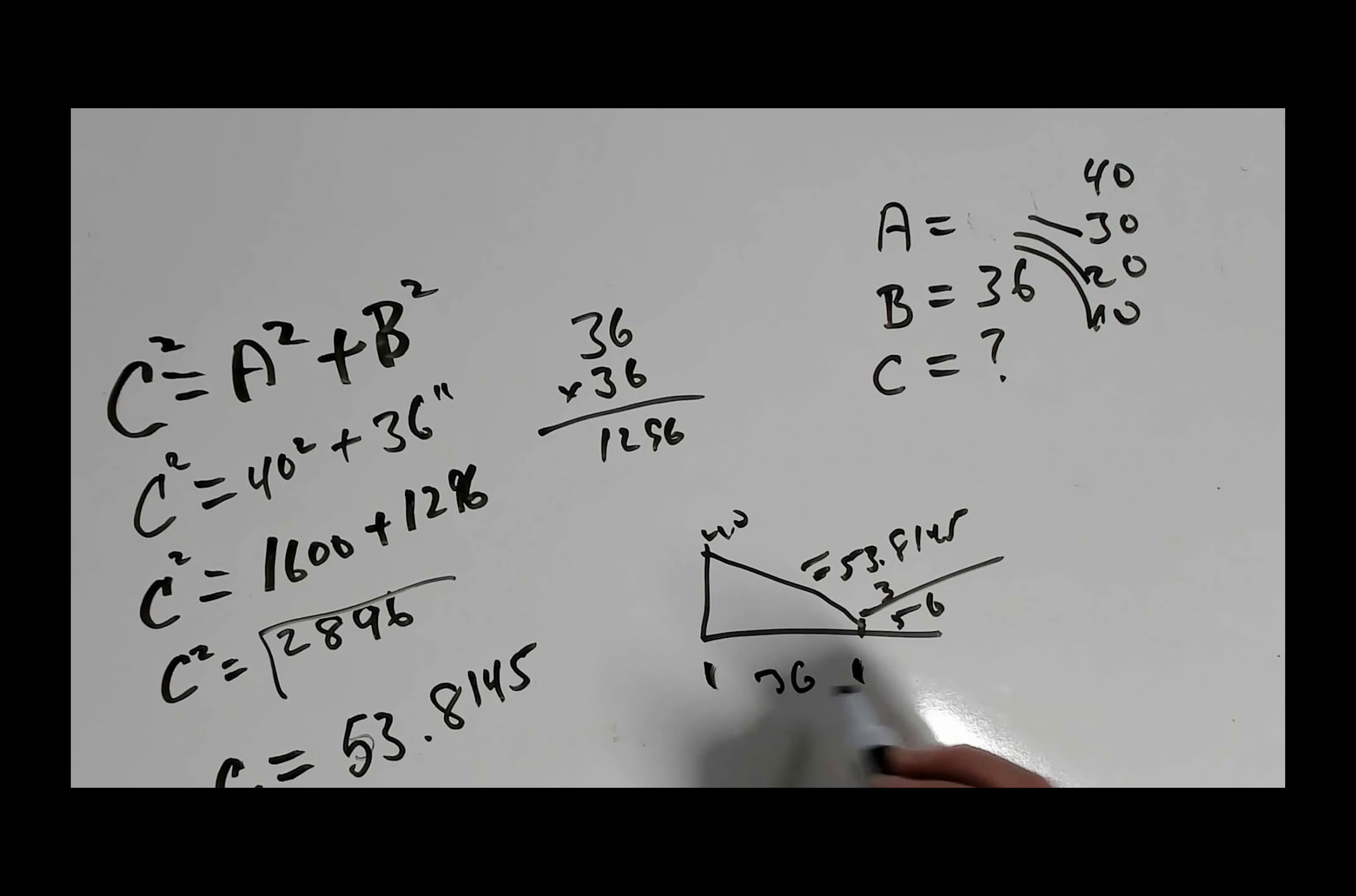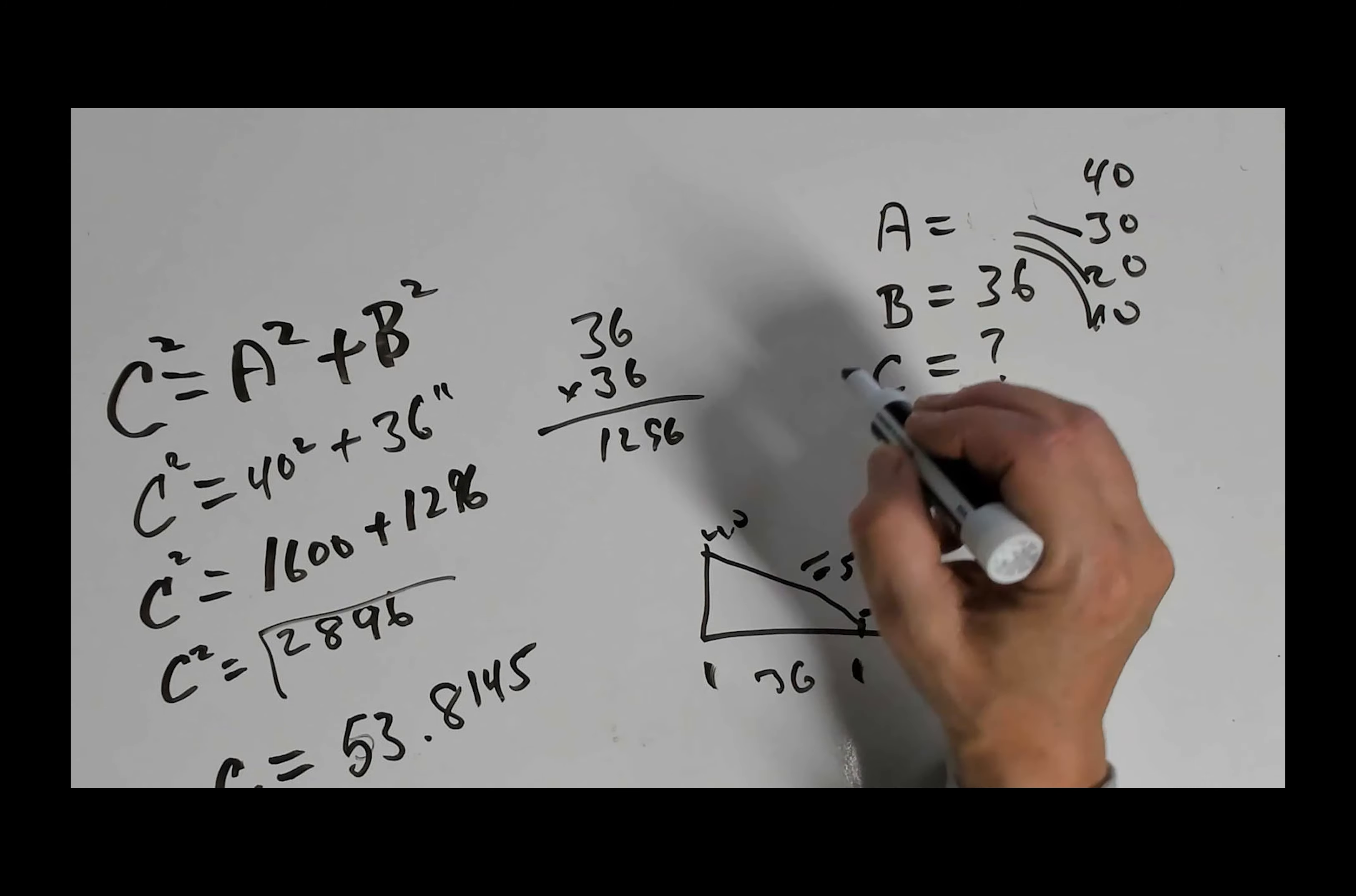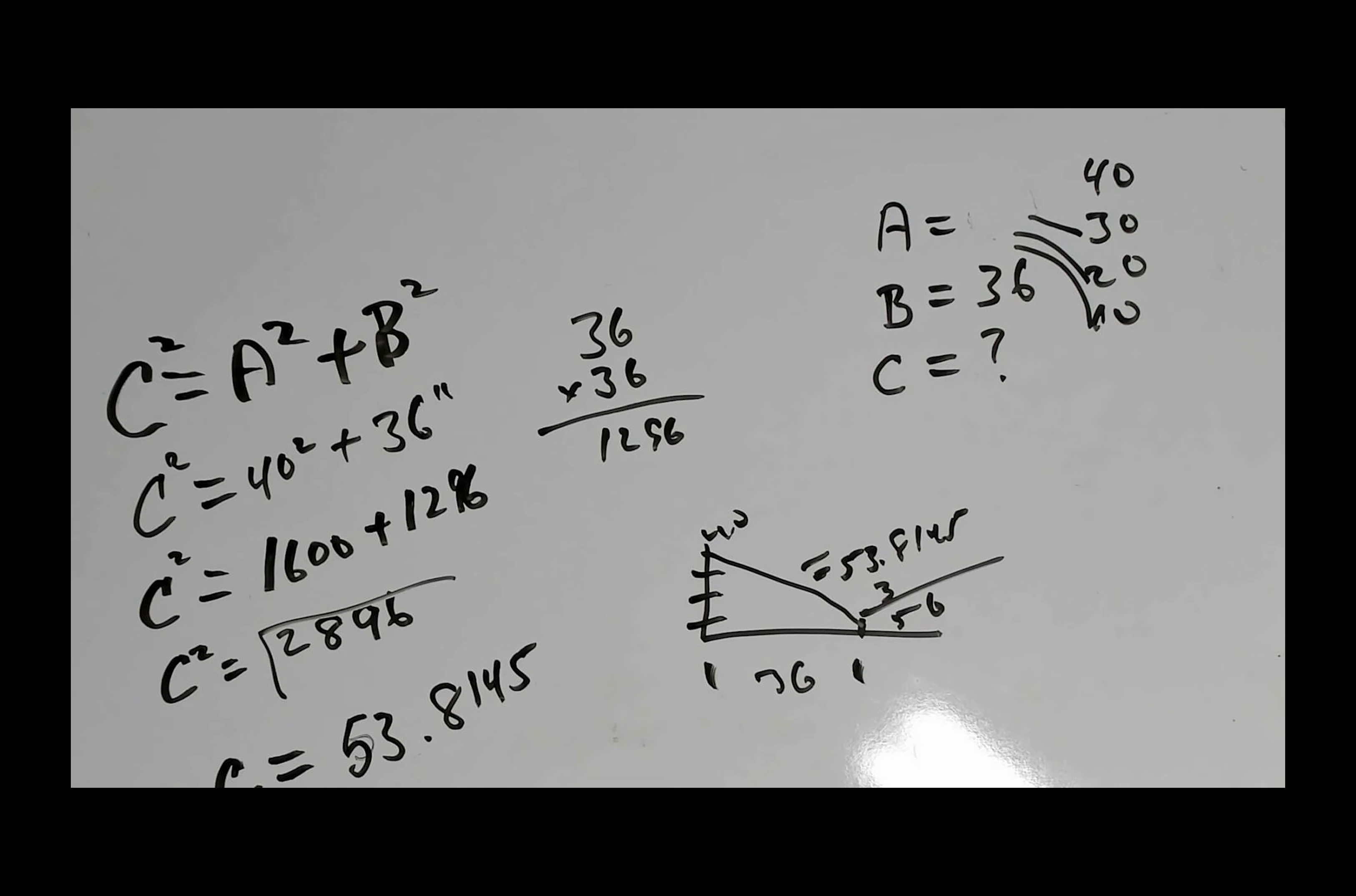B, which is the length from the mast to the anchor, the 36, remains the same on this particular set of guy lines. And you'll always be calculating for C. So the only variable that you will be changing is the actual point where the guy lines are being attached. Just go back and follow this calculation and you should be good to go.